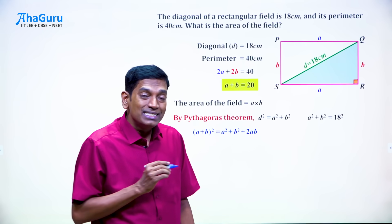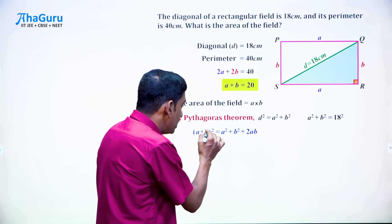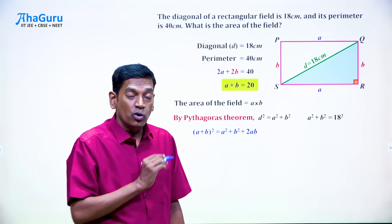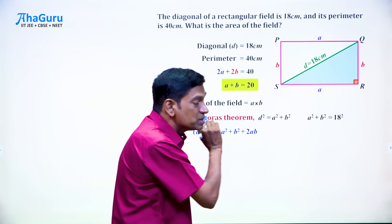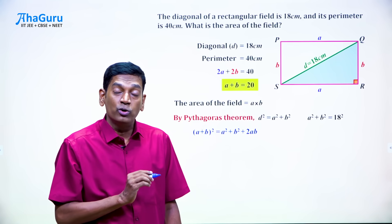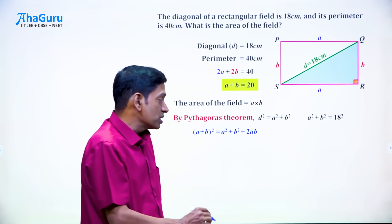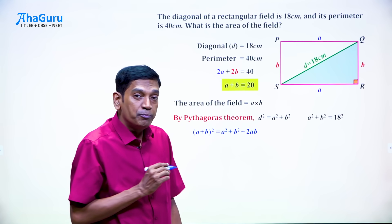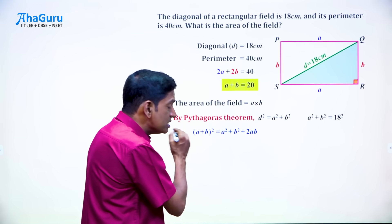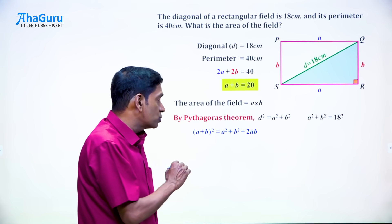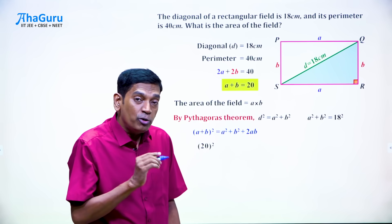Now here you can see that A plus B is something that we already know and A square plus B square is also something that we already know. So we can substitute. For A plus B, if we put 20, the left hand side will become 20 square.